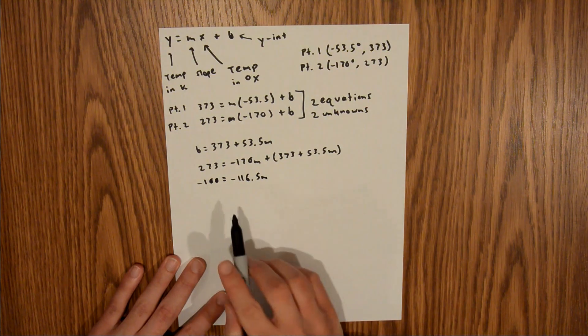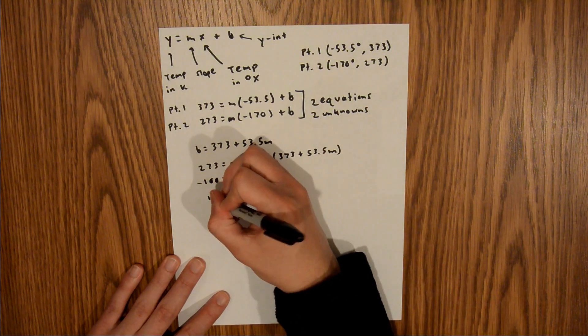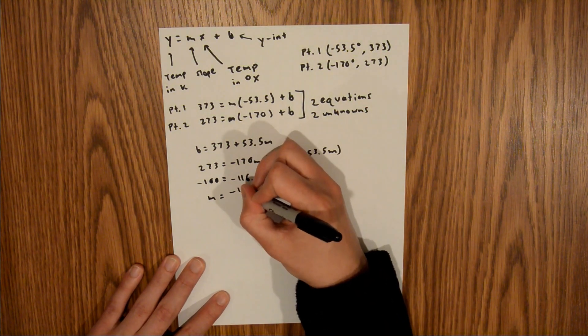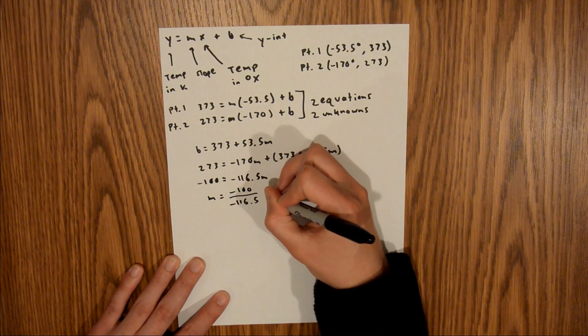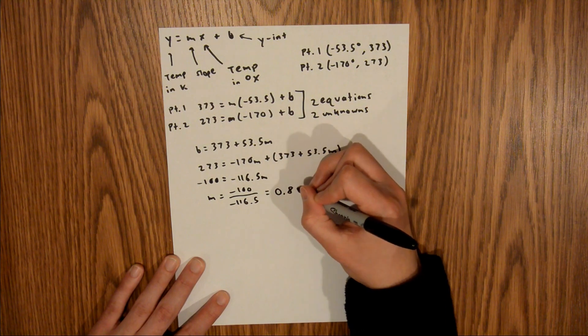So now if I divide both sides by this negative 116.5, that's going to give me that m is equal to negative 100 over negative 116.5, and that is equal to 0.858.